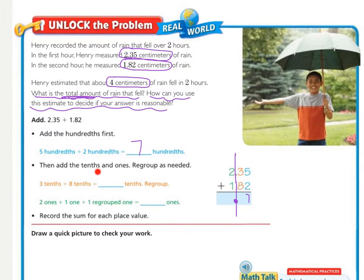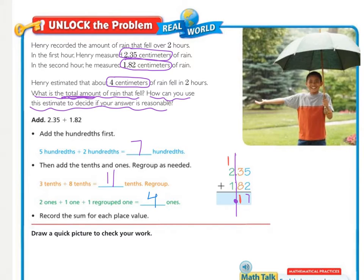The next step is to add the tenths and ones, regrouping as needed. We're starting on the right-hand side and working our way left. So now we're on the tenths: 3 tenths plus 8 tenths equals 11. We write the 1 and regroup the other 1 up, because 11 is 10 and 1. For the ones place, we have 2 ones plus 1 one, and then our regrouped 1, which equals 4 ones. So we record that here as we work.